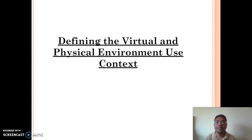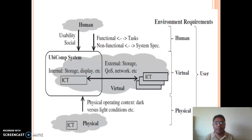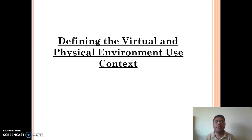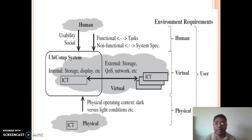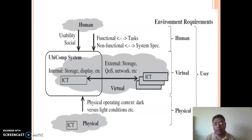Next we will see how to define the virtual and physical environment use context. This diagram describes how to define these environments. The user's presence is present in all three environments: physical, virtual, and human. In the virtual environment, information about ICT tools — their connection, storage, and display — is present. In the physical environment, it describes the conditions where those ICT tools will be present and the context in which we will use them.